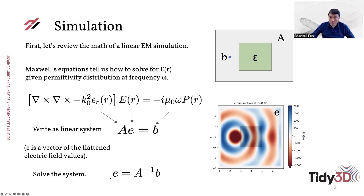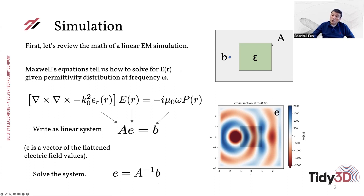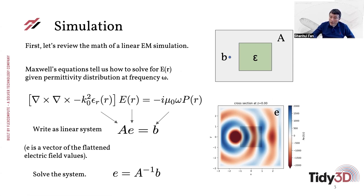Formally, you can write the solution in terms of the inverse of the matrix times the right-hand side. In reality, very rarely do you actually form the inverse of the matrix — we use this notation only to denote that we are solving the linear system in some way. As an example, if you have a square piece of dielectric and put a source on one side as indicated by b, then solving this equation gives the electric field distribution, and the field spreads out over the entire computational cell.